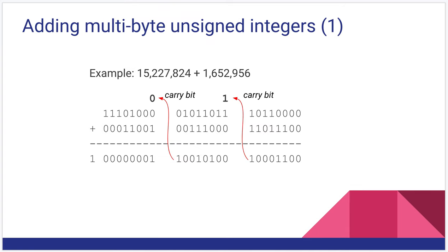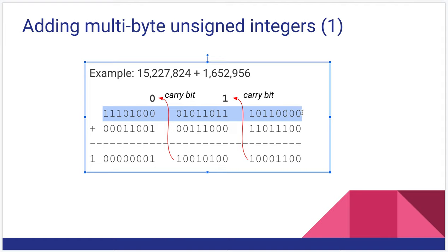Now that C bit becomes useful when we want to add multibyte integers. ADC itself can only add eight bits at a time. If we want more bits, in other words more bytes, we have to perform multiple ADC's and the purpose of the carry bit is to carry that carry out into the next addition. So here's my example: 15,227,824 which would be this three byte integer in unsigned plus 1,652,956 which in three bytes or twenty four bits would be this value.